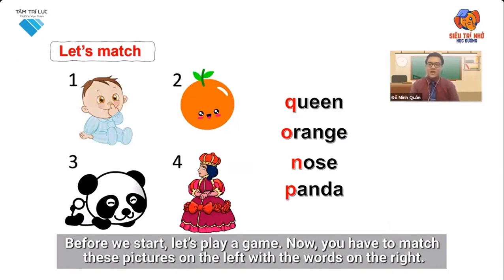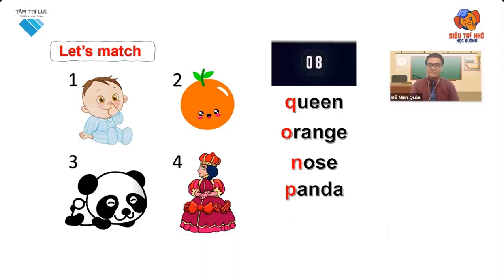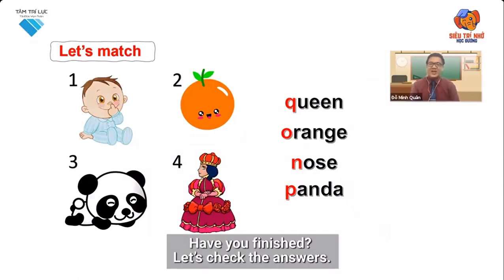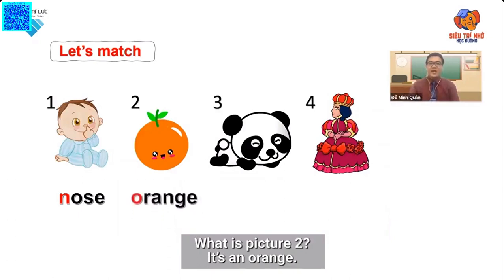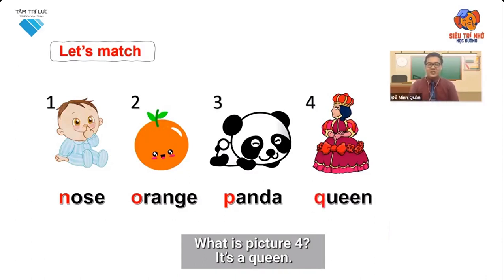Before we start, let's play again. You have to match these pictures on the left with the words on the right. Are you ready? Let's start. Have you finished? Let's check the answers. What is picture one? It's a nose. What is picture two? It's an orange. What is picture three? It's a panda. What is picture four? It's a queen. Well done everyone.